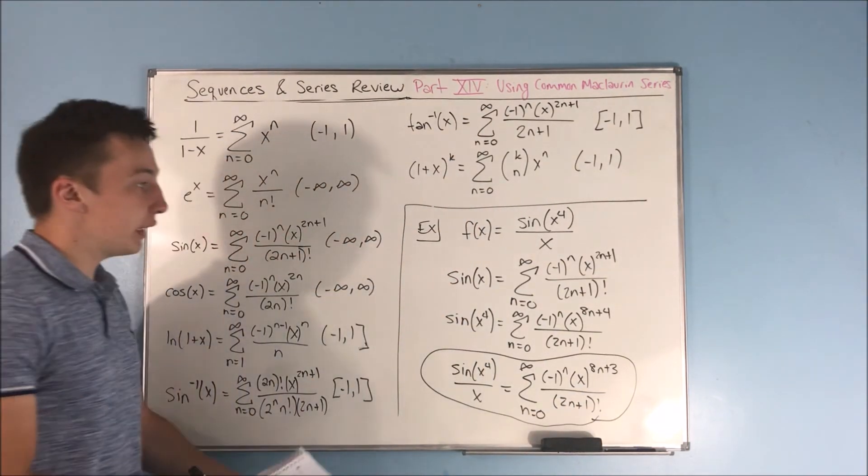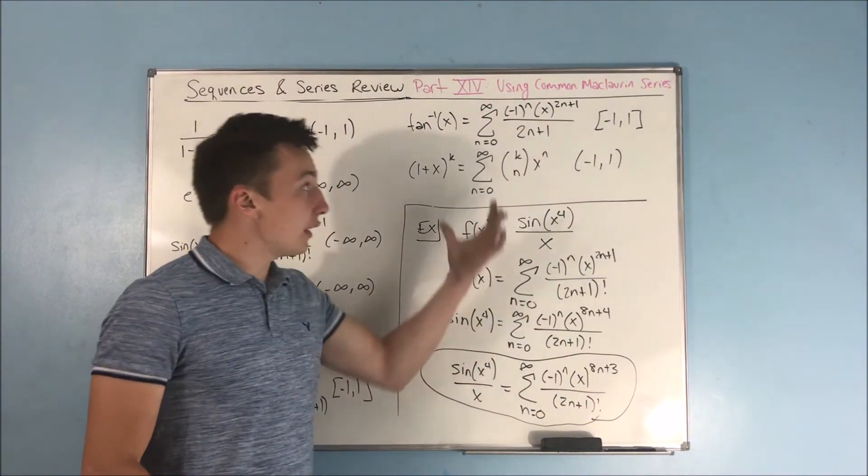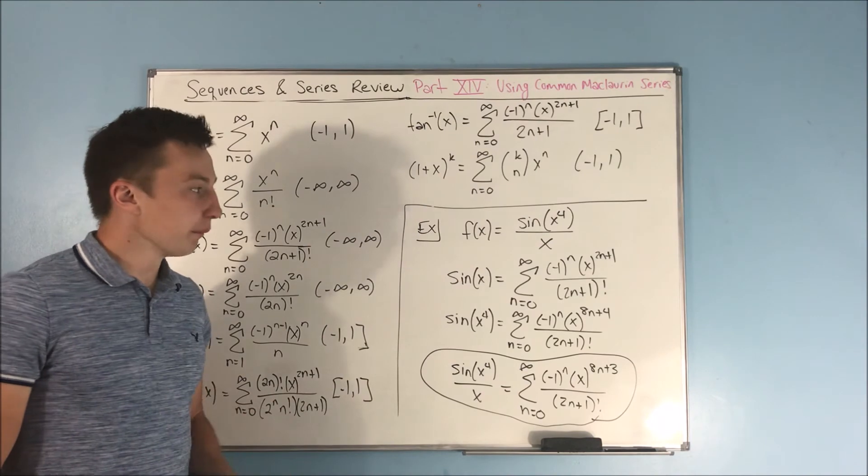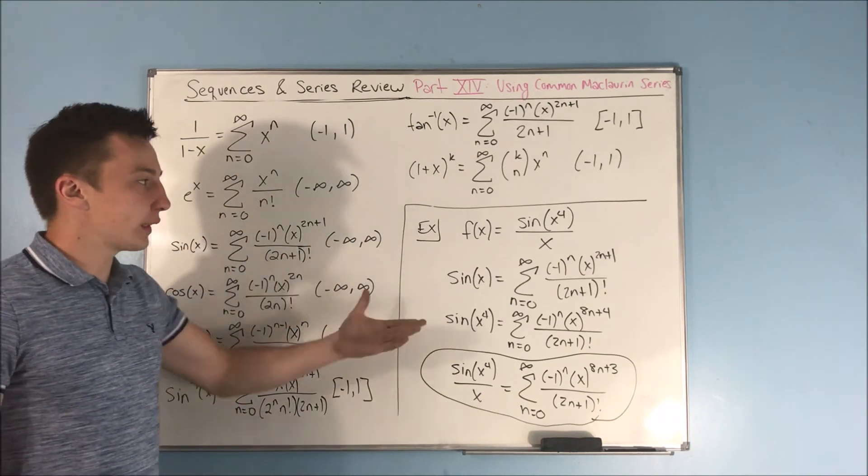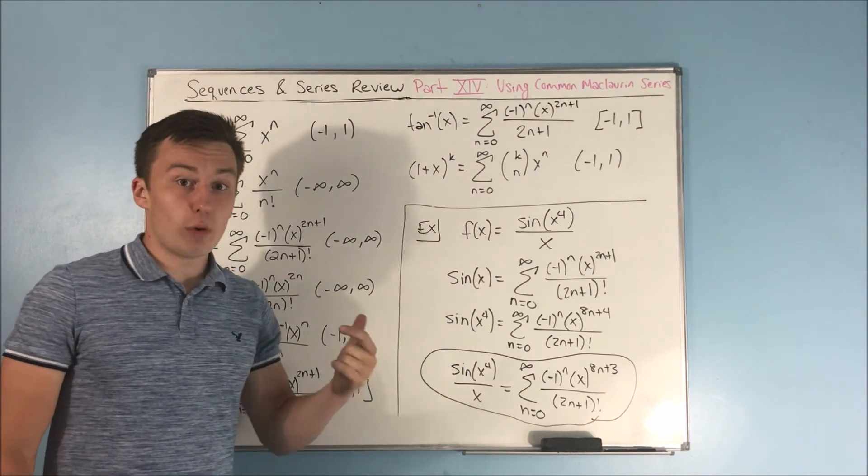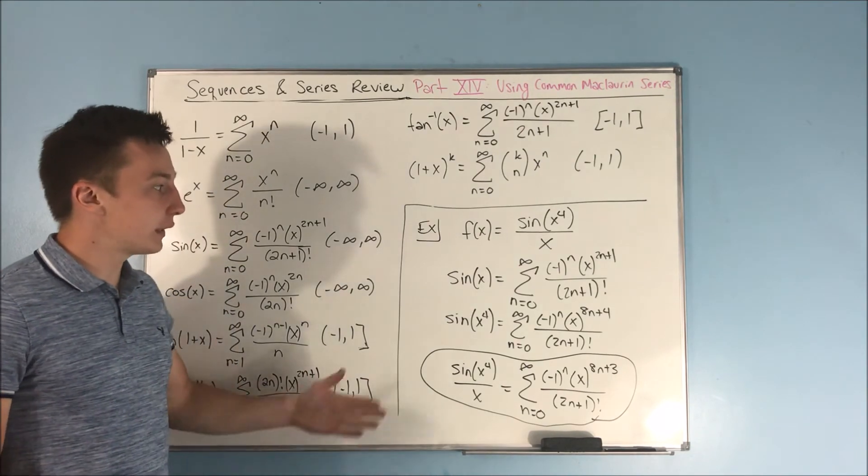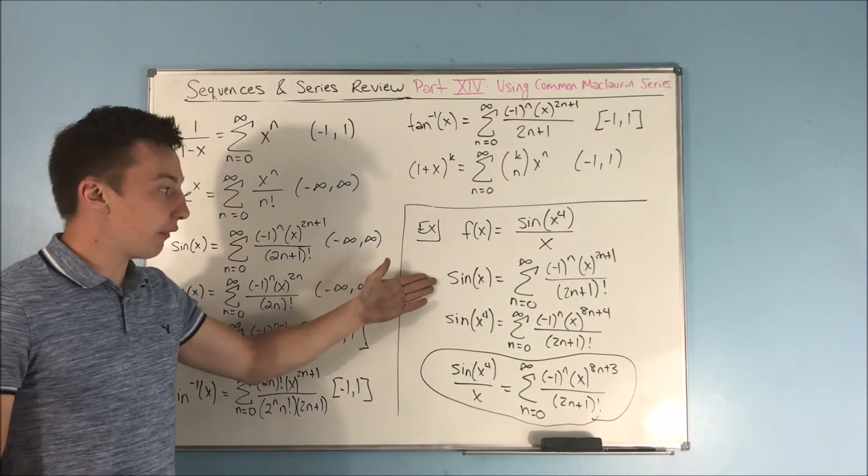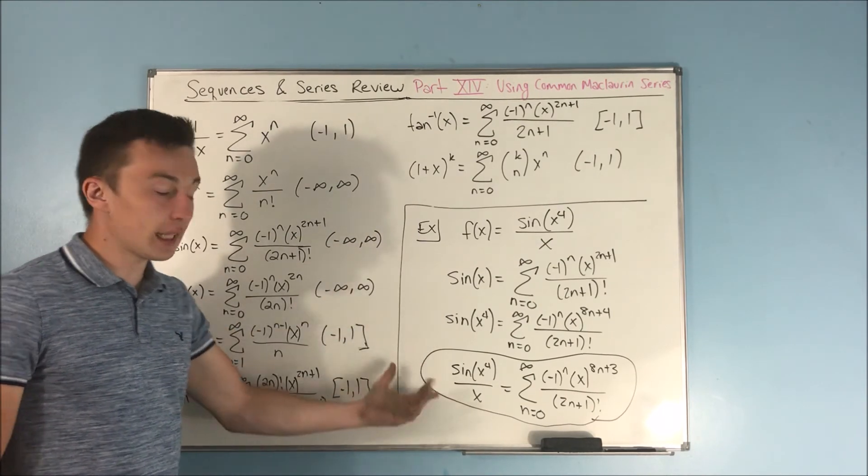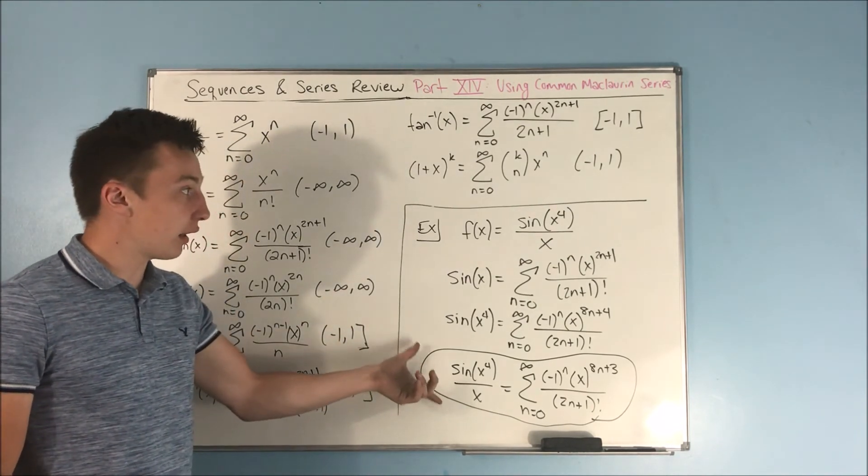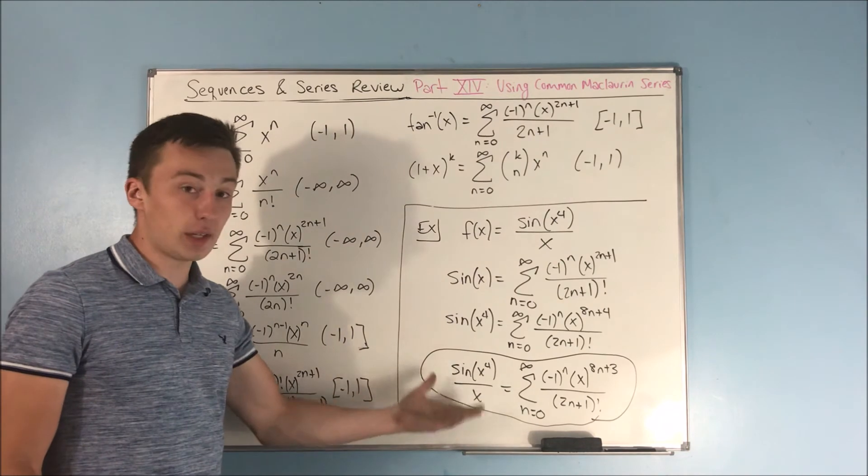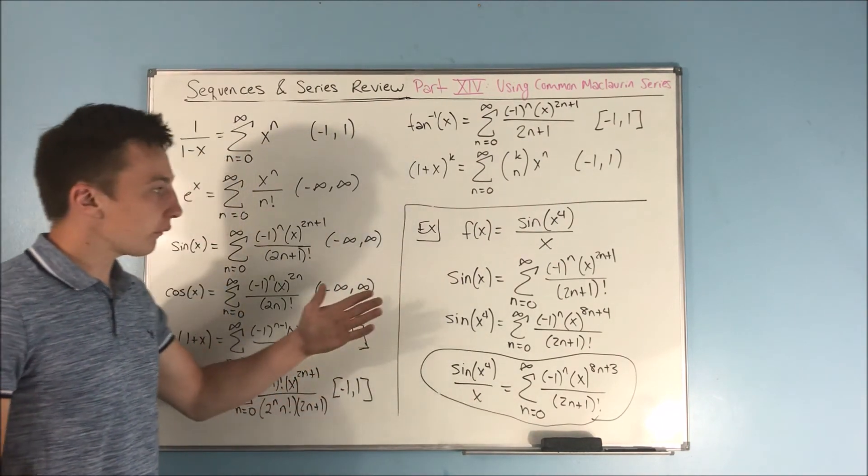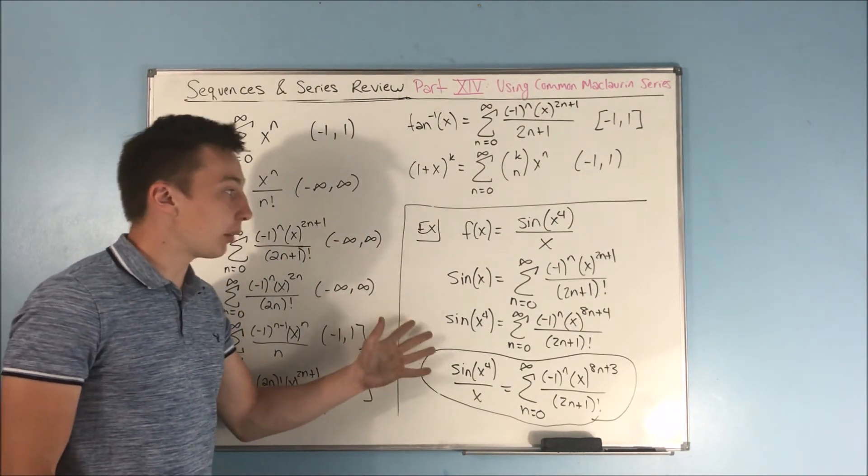So it's pretty easy as long as you know the common Maclaurin series. And of course, as I said, if you're not super great with memorization, that's fine still. Because yes, it'll take you a little bit longer. But if you figure out sine of x, then you can just do this exact same thing and figure out sine of x to the 4th over x. So it's not like you have to remember it.